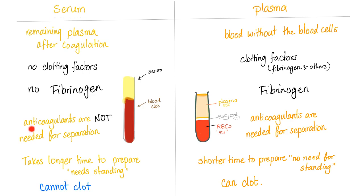To prepare serum, there is no need for anticoagulant to separate. For plasma, anticoagulants are needed for separation, because if you leave blood alone, it's going to clot. To prepare serum it takes longer, because it needs standing — you have to wait until the blood clots, then the clot starts to contract, and when it contracts, it releases the serum. Plasma has a shorter preparation time with no need for standing.